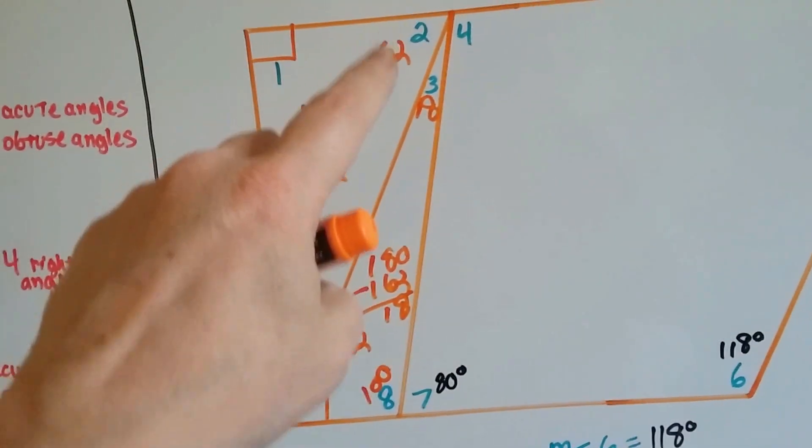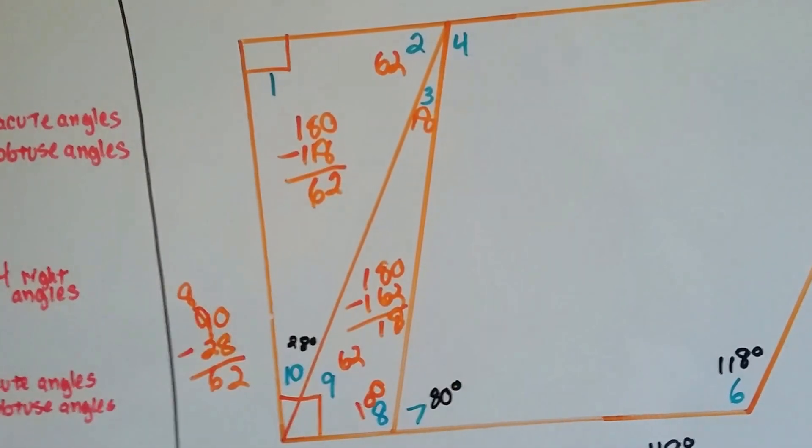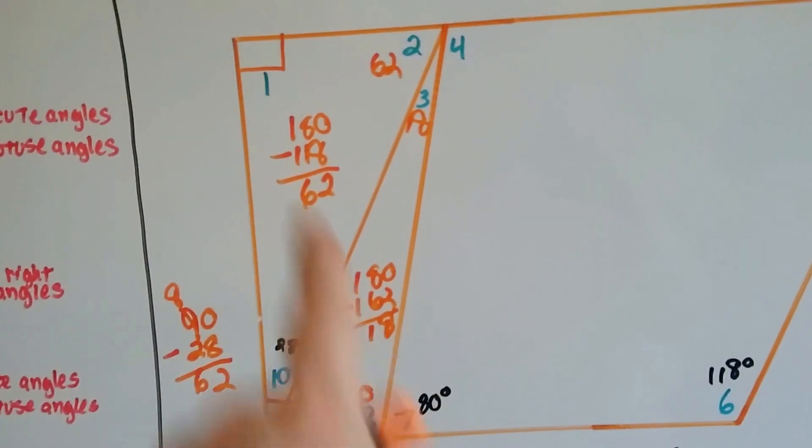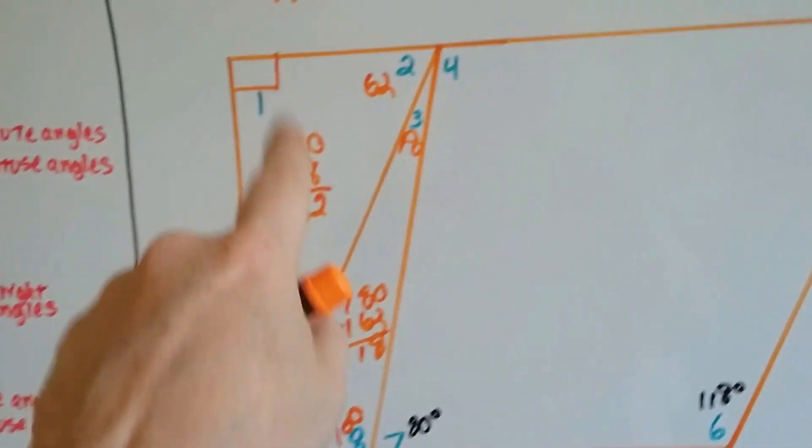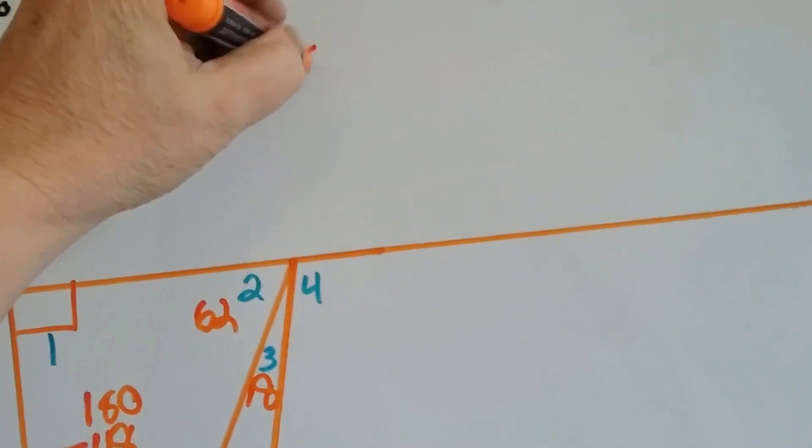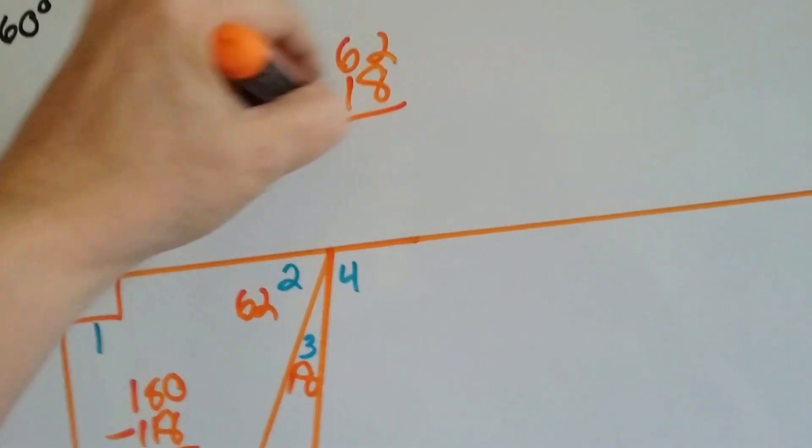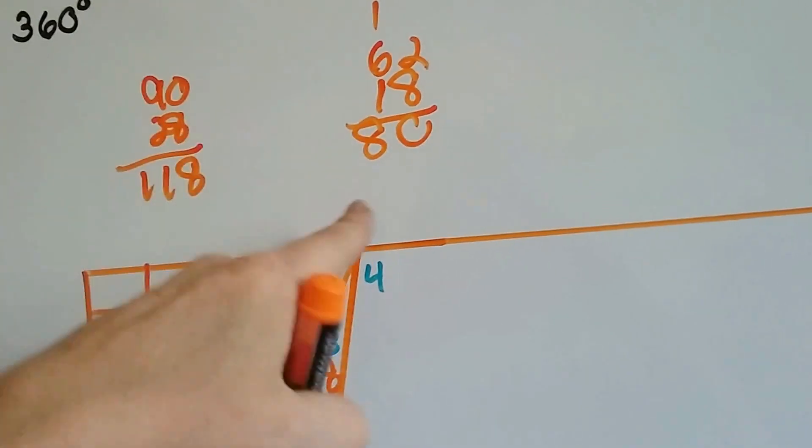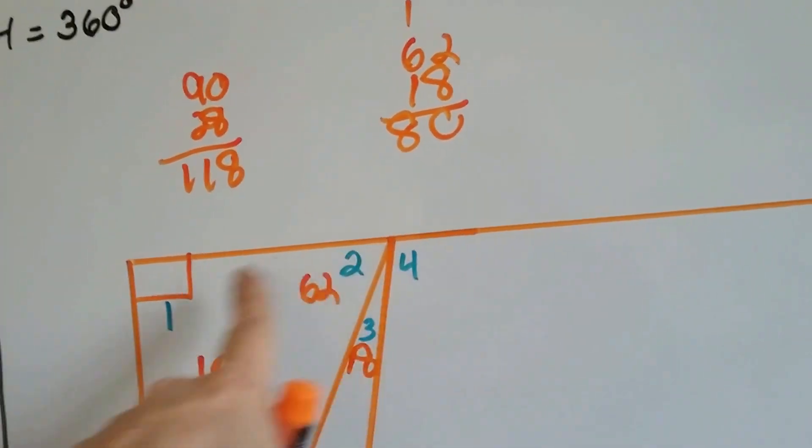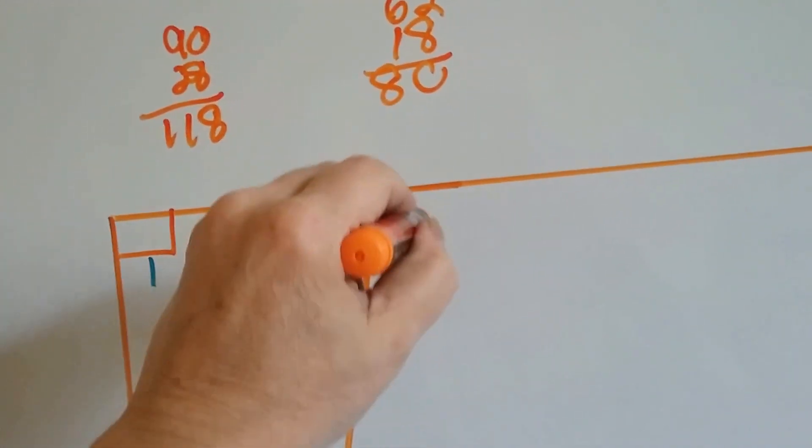All right. So if this is 62 and this is 18, what is angle 4? Ah, we know a straight line is 180. So we can do 62 and 18 is 80 degrees, and if a straight line is 180, number 4 must be 100.